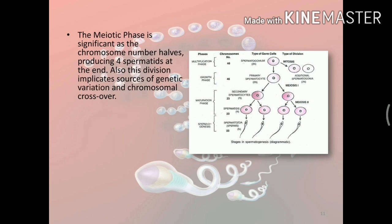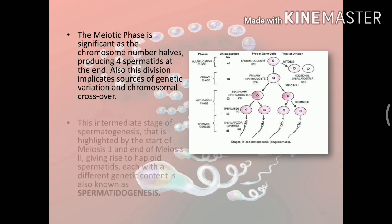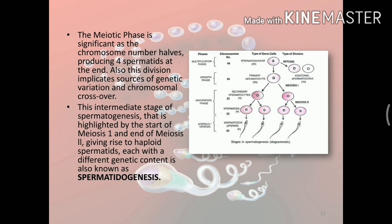The meiotic phase is significant as the chromosome number halves, producing four spermatids at the end. This division also implicates sources of genetic variation and chromosomal crossover, making it a very important step in the entire process of spermatogenesis. This intermediate stage, highlighted by the start of meiosis 1 and end of meiosis 2, giving rise to haploid spermatids each with different genetic content, is also known as spermatidogenesis.